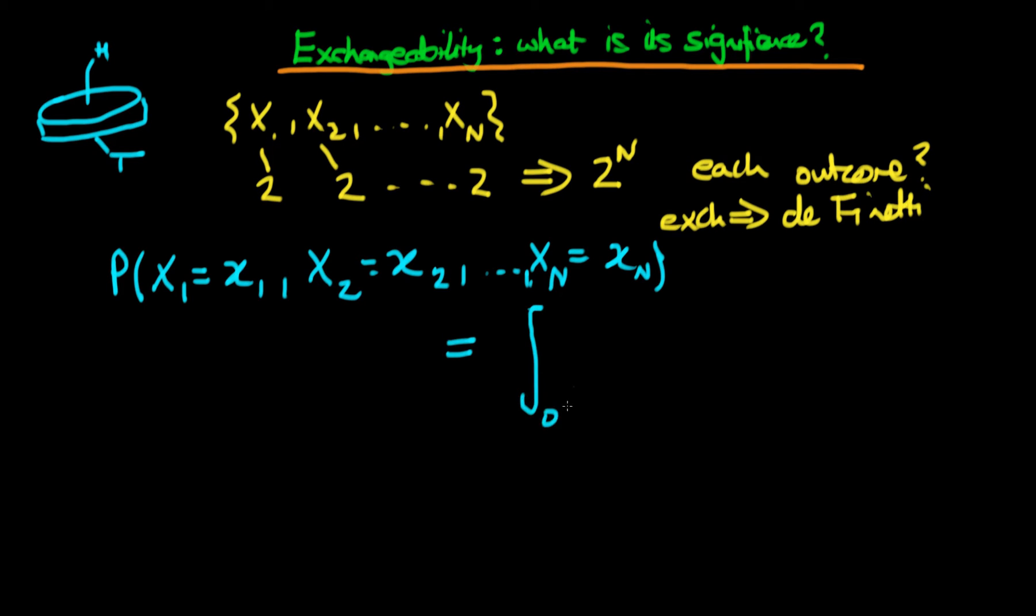The integral is from 0 to 1 of theta to the power of the sum of the individual values of xi, so the sum from x1, x2 all the way through to xn, times 1 minus theta to the power n minus the sum of xi.